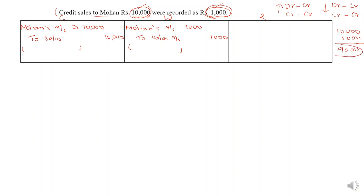Since we have to increase, Mohan's account will be further debited — we write the difference amount 9,000 — to sales account, again credited for 9,000. This is because if you have to increase, the debit should be debited again and the credit should be credited again, using only the difference amount. Then write the narration.